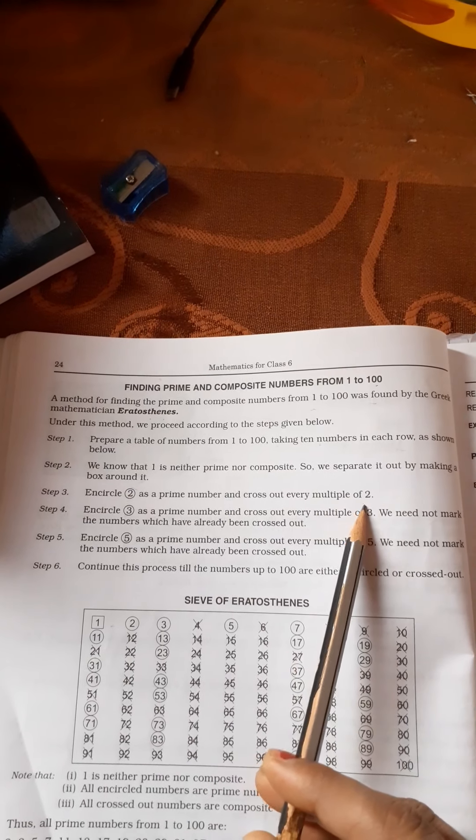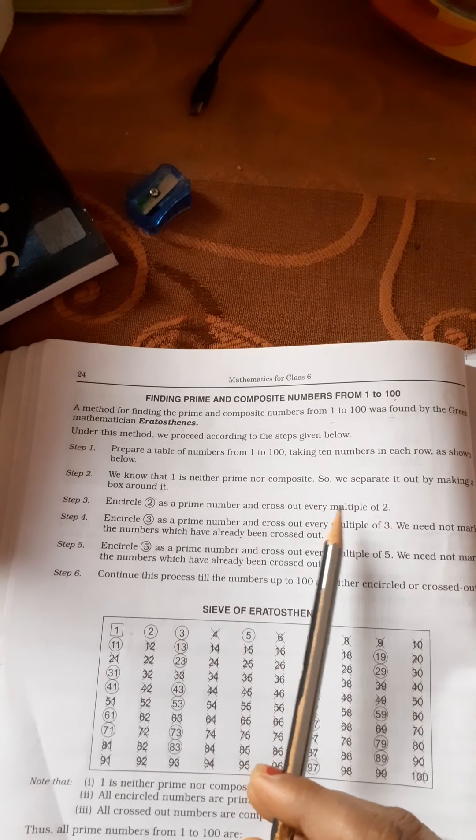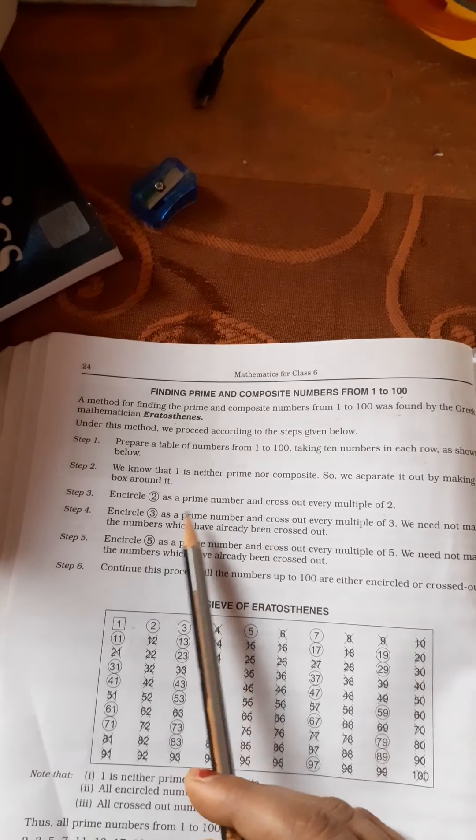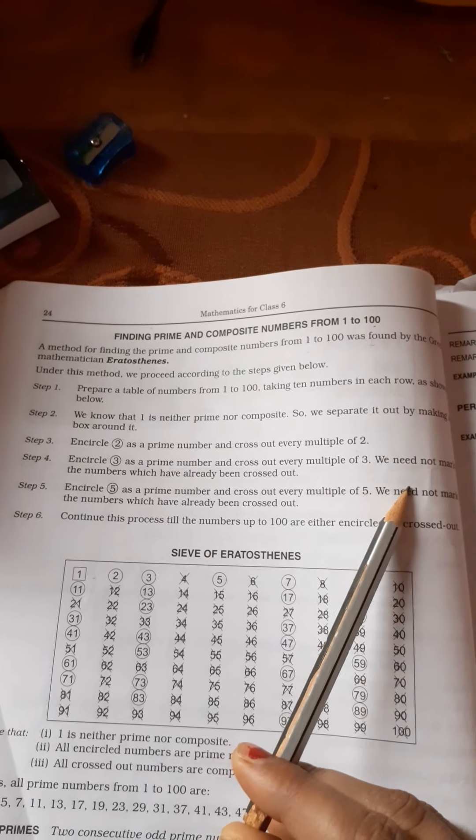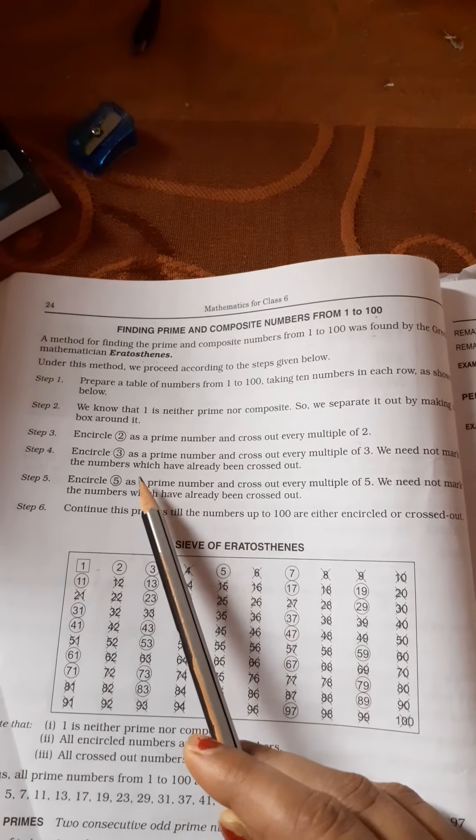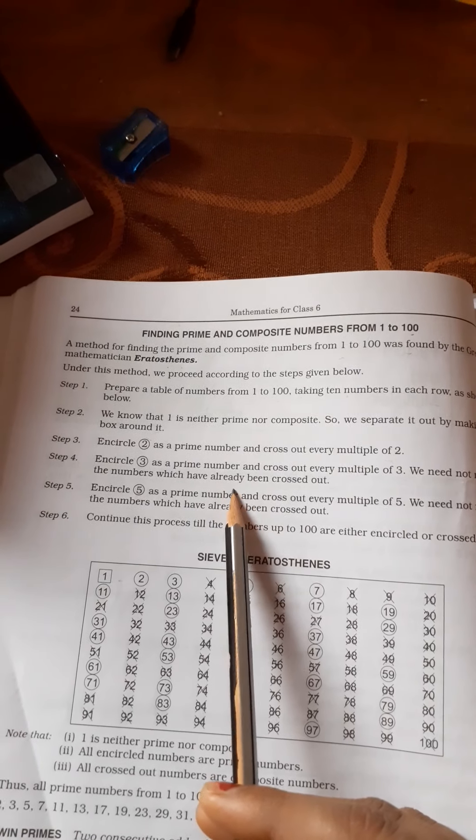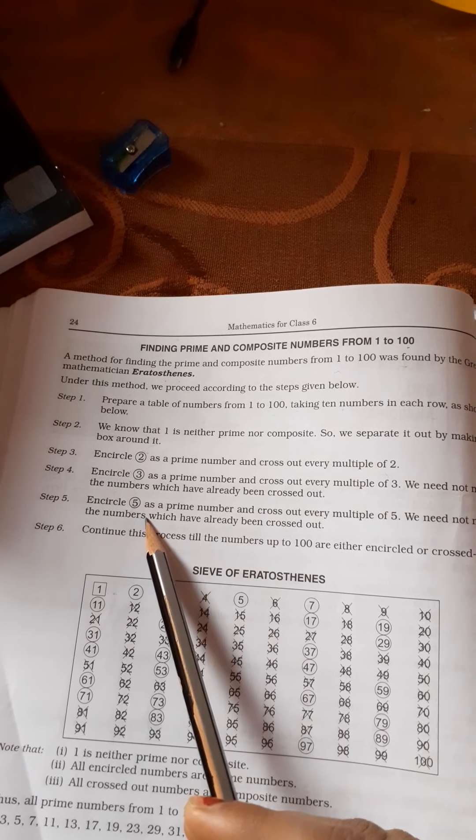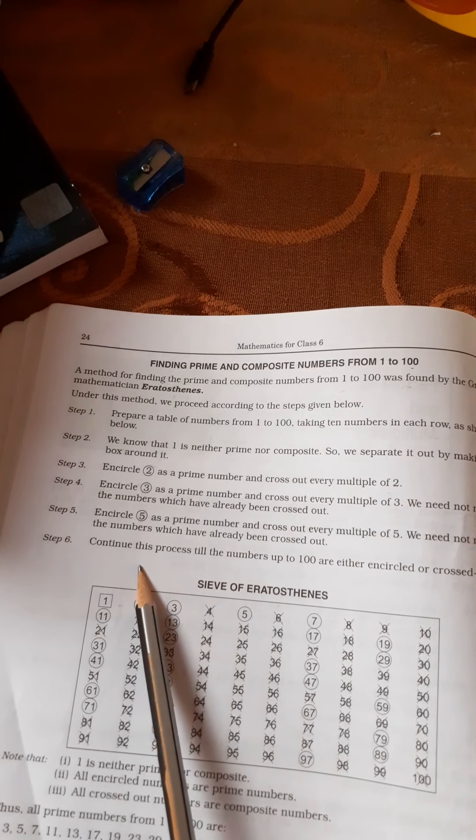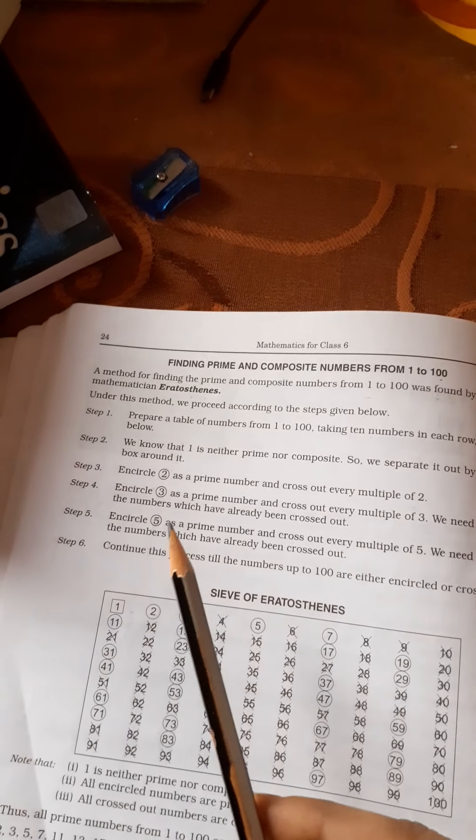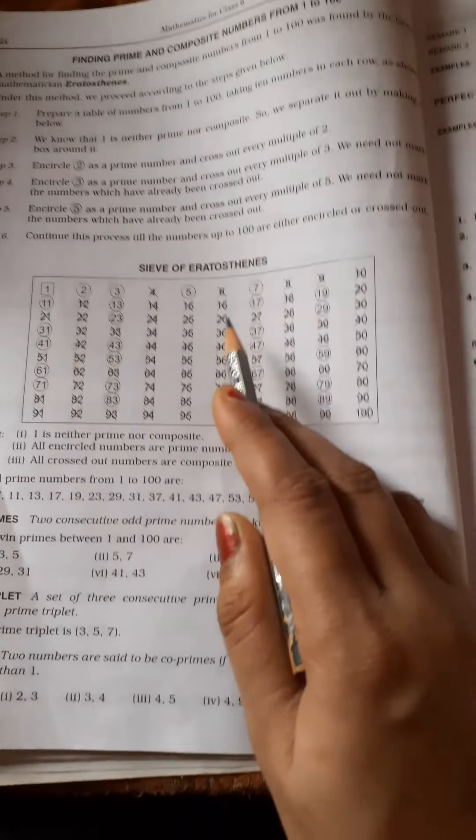Then encircle 2 as a prime number and cross out every multiple of 2. Encircle 3 as a prime number and cross out every multiple of 3. We need not mark the numbers which have already been crossed out. Then 5 is a prime number, circle it, and cross out its multiples. Continue this process, then check 7, and keep crossing out numbers as you go.